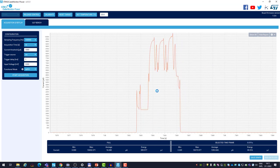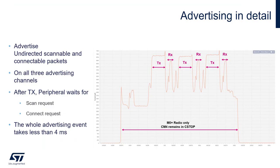This is the time when CM0+ and the radio are active, and you can see some periodic pattern. The device advertises scannable and connectable packets on all three advertising channels. After each packet is sent, the radio switches to RX and waits for either a scan request or a connect request. The whole advertising event takes less than 4 milliseconds to complete.